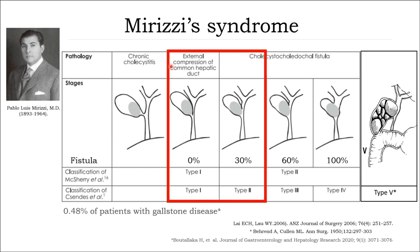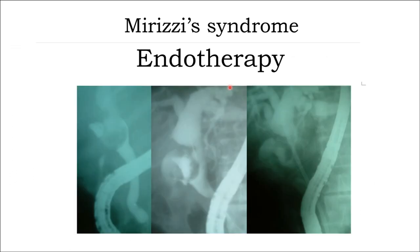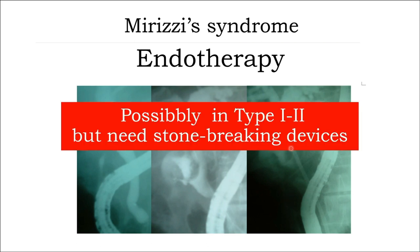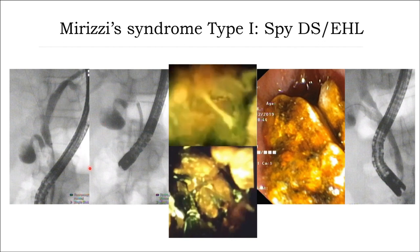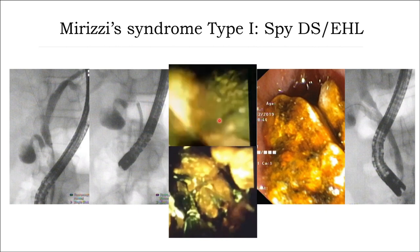One special application of endoscopic treatment is Mirizzi syndrome — classified by McChurie or Csendes. Type 1 and type 2 can be managed with endoscopic treatment. In a type 2–3 Mirizzi syndrome case with a large stone in the cystic duct and common hepatic duct, we used laser in this case and placed a stent. It's possible for type 1 and type 2 but you need a stone-breaking device. In this type 1 Mirizzi case, we inserted SpyGlass inside and used holmium laser to break the stone — then all stone fragments were removed with complete stone clearance.